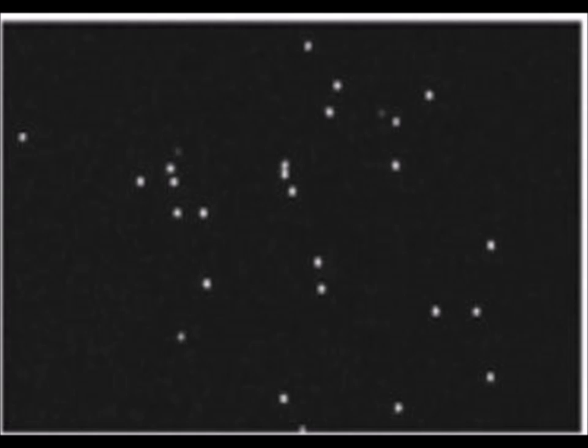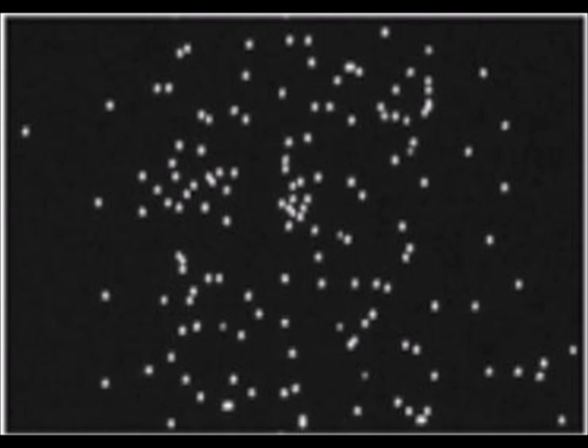In the two-slit experiment, a single photon can form an interference pattern. Over a period of time, individual photons form a pattern of straight lines.